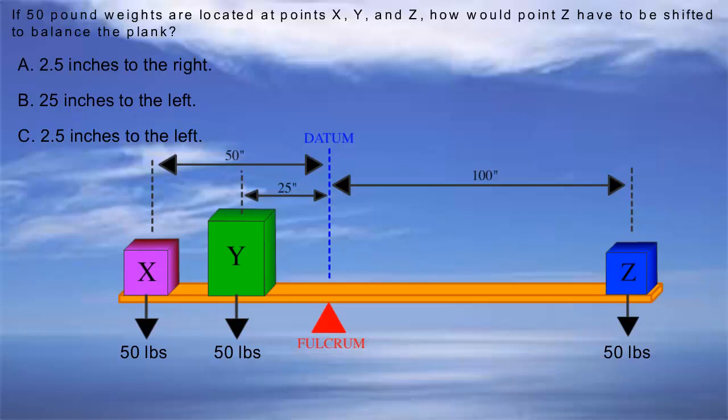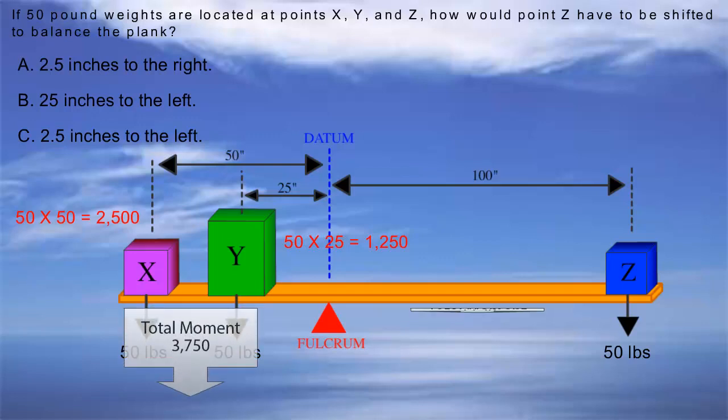The system is very similar to the one used in the previous slide. To balance the plank, we need to make sure that the moment on the left side of the plank is the same as the right side. We know that we need to shift the weight on the right side. So to find out how much, let's calculate the moment of the left side first. Weight X's moment is given by multiplying 50, the weight, by 50, the distance, so 2,500. While weight Y's moment is given by multiplying 50 times 25, so 1,250. The total moment on the left side is 3,750, which needs to be equal to the right side.